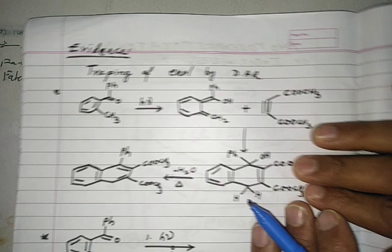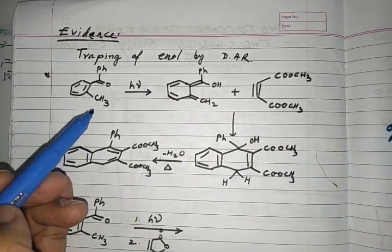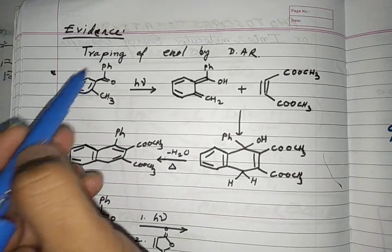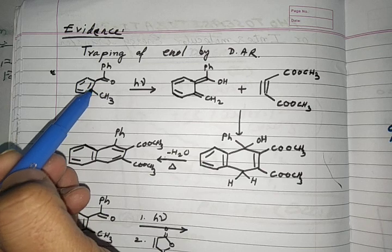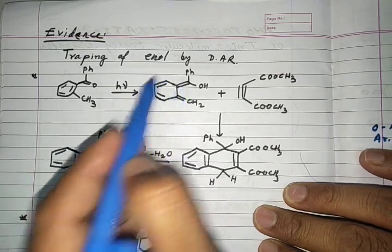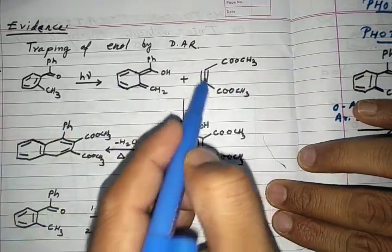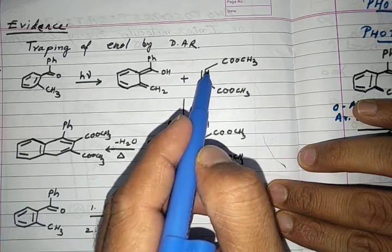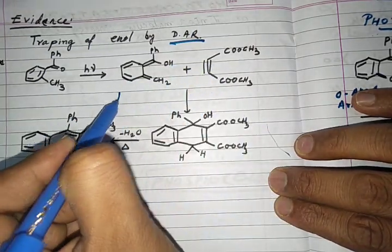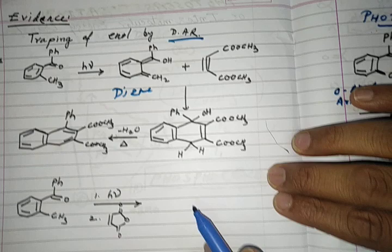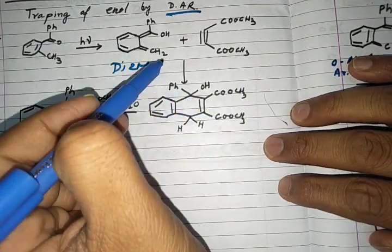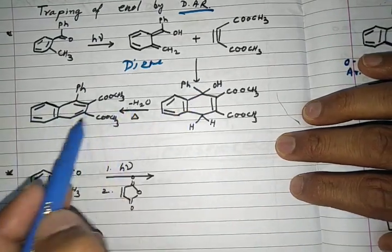We can also find evidence for photoenolization by trapping the enol intermediate. For example, ortho-methyl benzophenone irradiated with light forms an enol. When this enol is reacted with a dienophile — as in a Diels-Alder reaction — a pericyclic cyclization takes place, trapping the enol. After loss of water, the corresponding product is obtained.